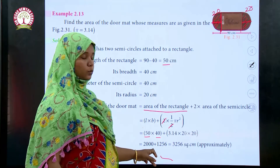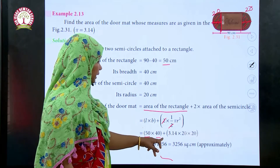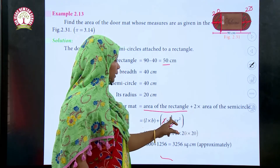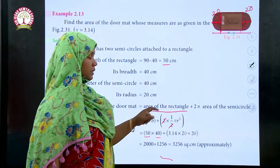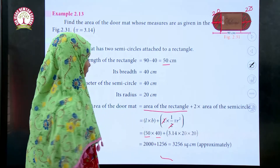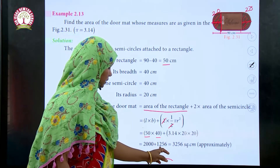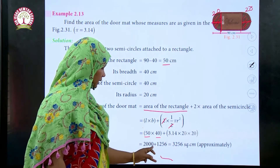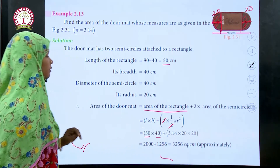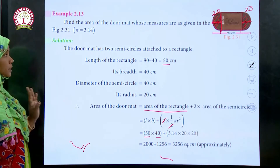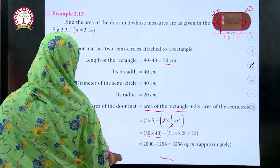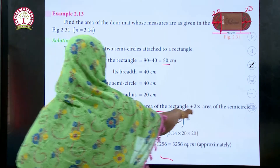So length times breadth is 2000, plus 2 times the area of the semicircle. The two and two cancel, leaving pi r squared, which is 1256. Adding together, we get 3256 centimeters squared as the area of the doormat.